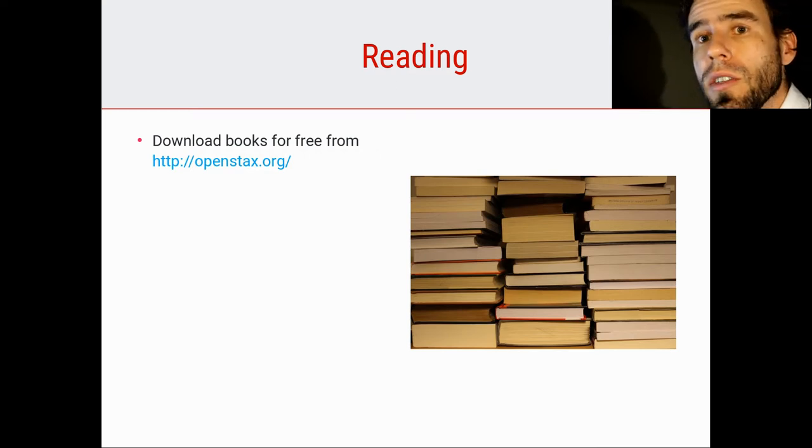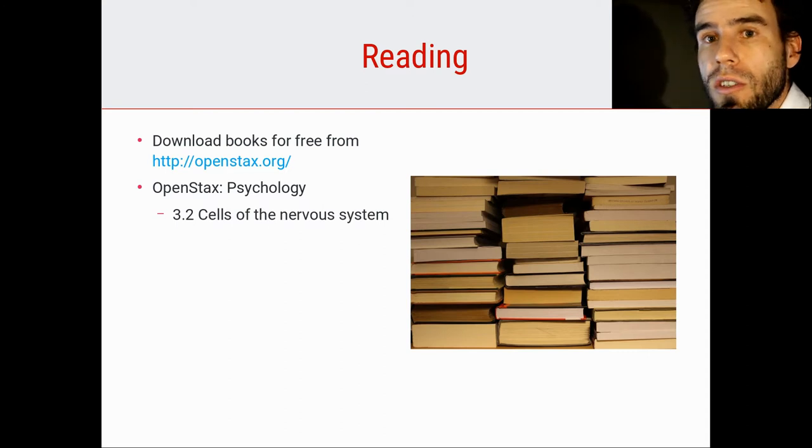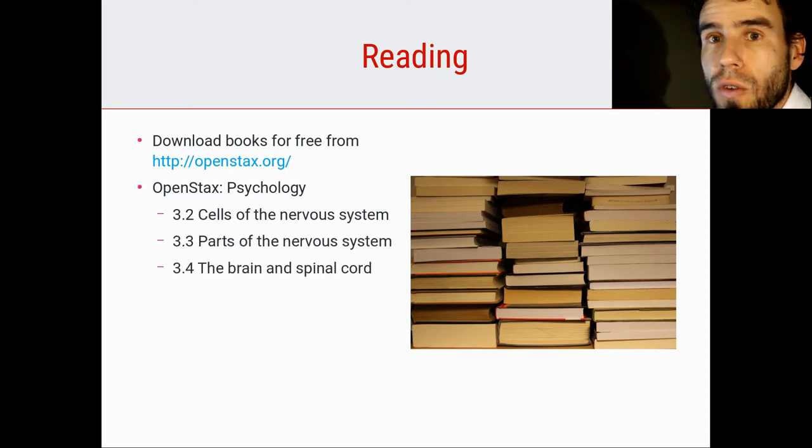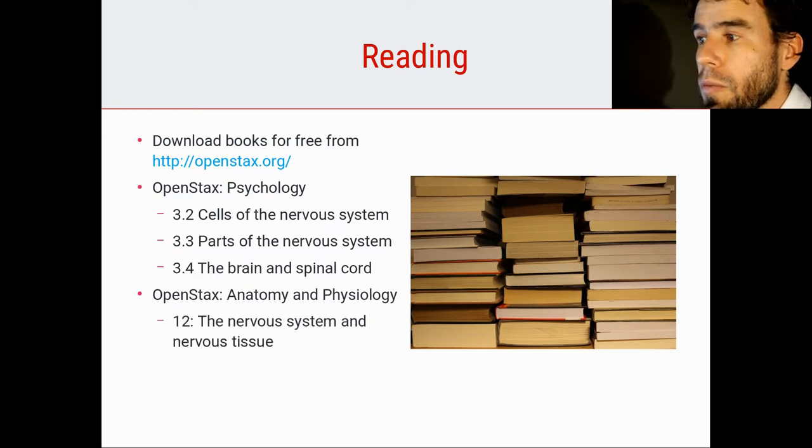So let's start with a little bit of reading. If you want to read some more of the stuff that we're going to talk about in this lecture, I recommend that you download the free textbooks that have been provided by OpenStax, very good free textbooks. And especially from the psychology textbook, sections 3.2, 3.3 and 3.4. And from the anatomy and physiology textbook, also from OpenStax, chapter 12 about the nervous system and nervous tissue.